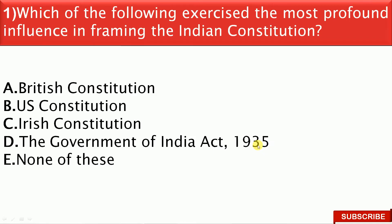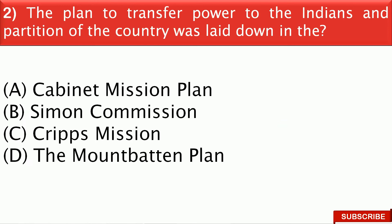First question: Which of the following exercised the most profound influence in framing the Indian constitution? The right answer is D — that is the Government of India Act 1935. Next: The plan to transfer power to the Indians and partition of the country was laid down in the — the right answer is D, that is the Mountbatten Plan.